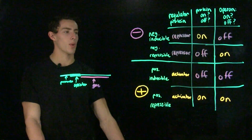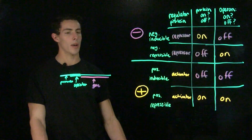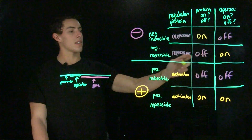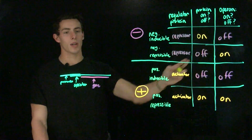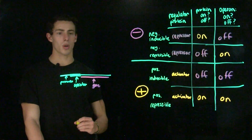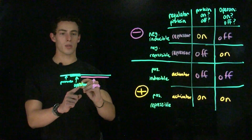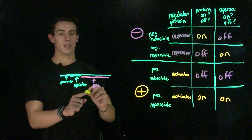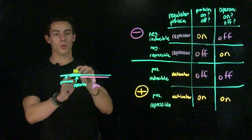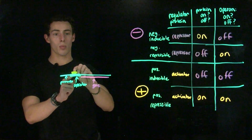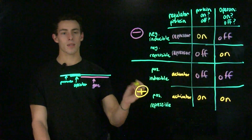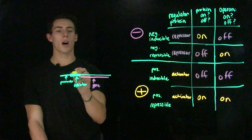Our next type of operon is a negative repressible operon. Because it's negative, we know that our regulatory protein is a repressor protein. And because it's repressible, we know that we are starting with transcription on, which means our repressor protein must be in the off configuration, or unable to bind to the operator at the moment. So we have to have another molecule called a co-repressor, which will bind to our regulatory protein. When the co-repressor binds to the regulatory protein in a negative repressible operon, it's going to change the shape of that protein's DNA binding motif, which will allow it to bind to the operator and repress transcription. Thus we have a negative repressible relationship, where a regulatory protein that starts in an inactive configuration is activated by a co-repressor to turn off transcription.